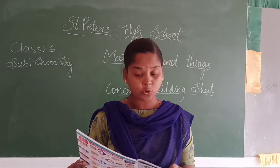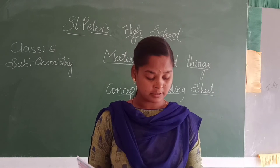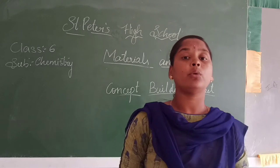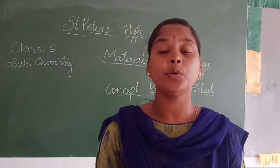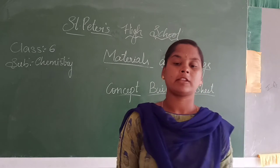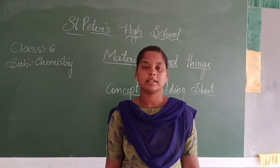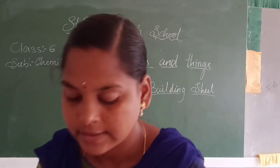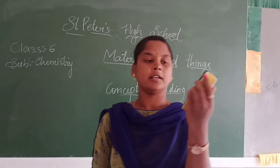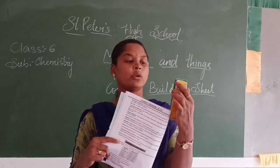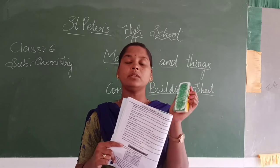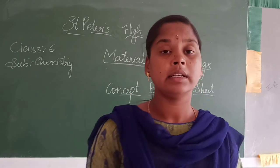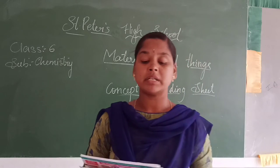Another object made up of only two materials. Any example? It is a duster. Wood is one material and the eraser part is the other. So there are two different materials.